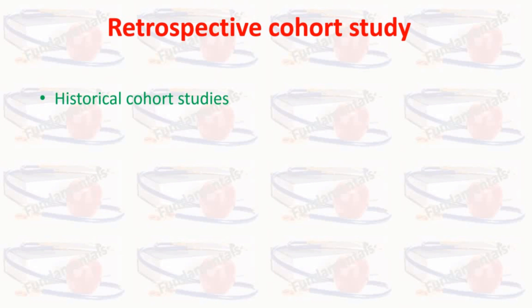The other type of cohort study is retrospective cohort study, also called historical cohort study. Sometimes in a prospective cohort study with a long outcome — for example, the cigarette smoking for ten years and lung cancer study — loss to follow-up, long wait for completion, and funding issues arise. In order to save time and money and complete the study in a shorter time, the retrospective study is the ideal alternative.